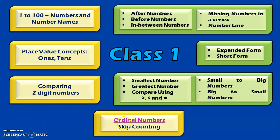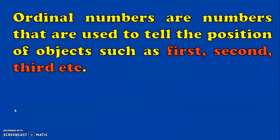In this video, we are going to see about the learning outcome ordinal numbers. Ordinal numbers are numbers used to tell the position of objects, such as first, second, third, etc. In real life situations we also use these terms — for example, when we conduct a race for children, we declare the first position, second position, and third position, which indicate the position of the children in the race.